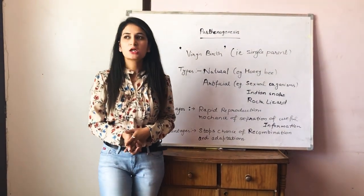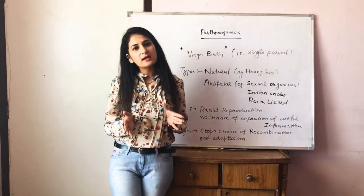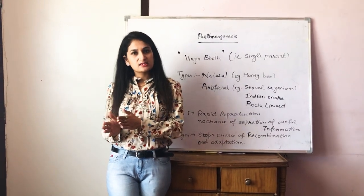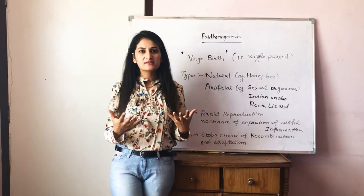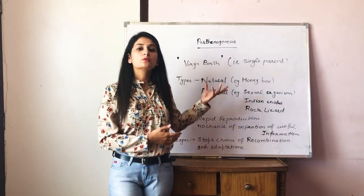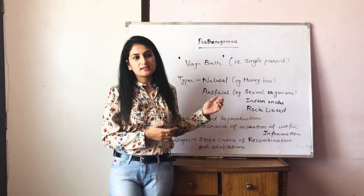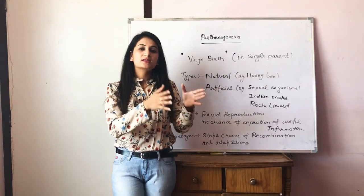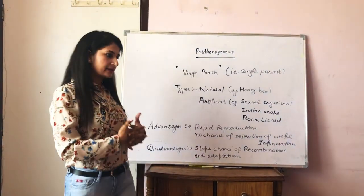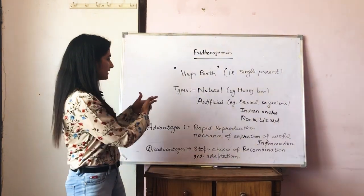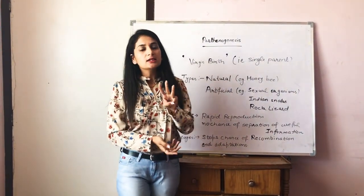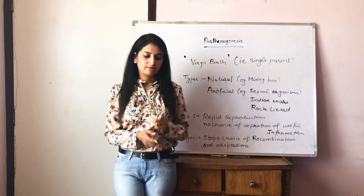In natural parthenogenesis, the whole life cycle of an organism includes this type of process — meaning the process is part of the whole life cycle of that organism. As an example of this type of reproduction, we take the honeybee. There are three members of the honeybee family.